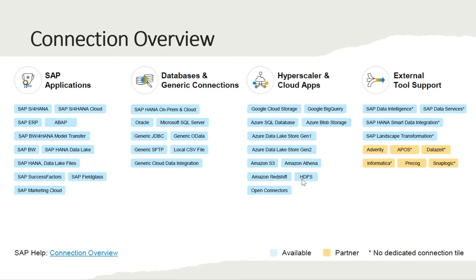This shows a connection overview of what kinds of connections are supported by SAP Data Sphere as per the latest release. You can see a lot of SAP applications which are supported for direct connection. Then we have databases and generic connections — Oracle, Microsoft SQL Server, generic OData — and then hyperscaler and cloud applications, and also external tool support.